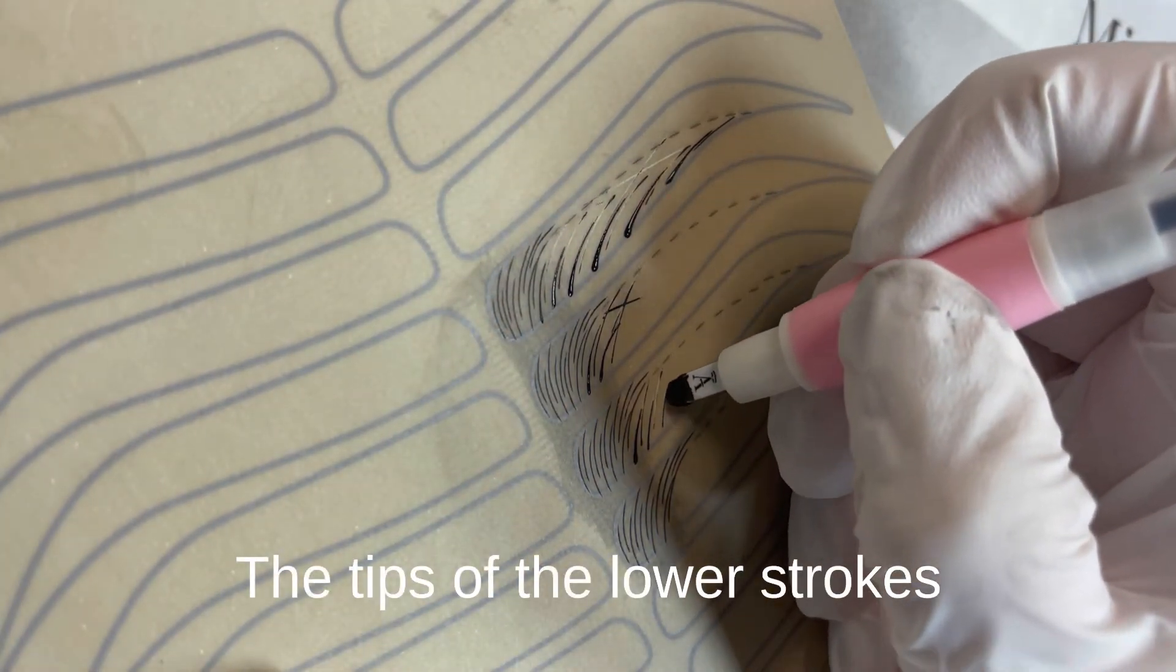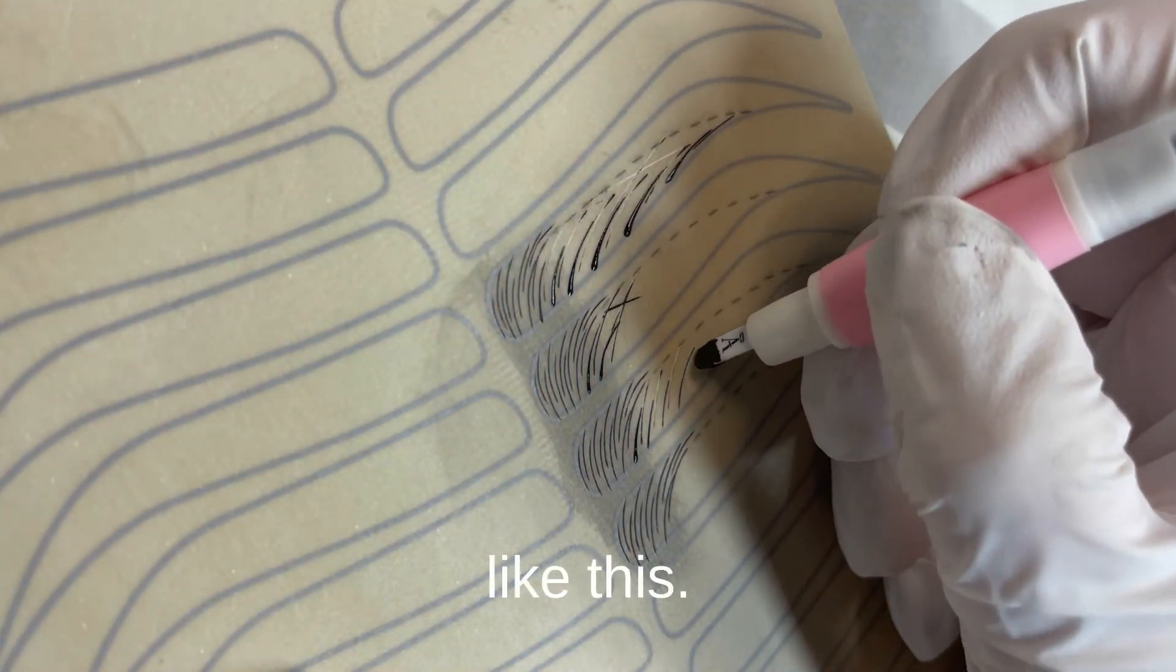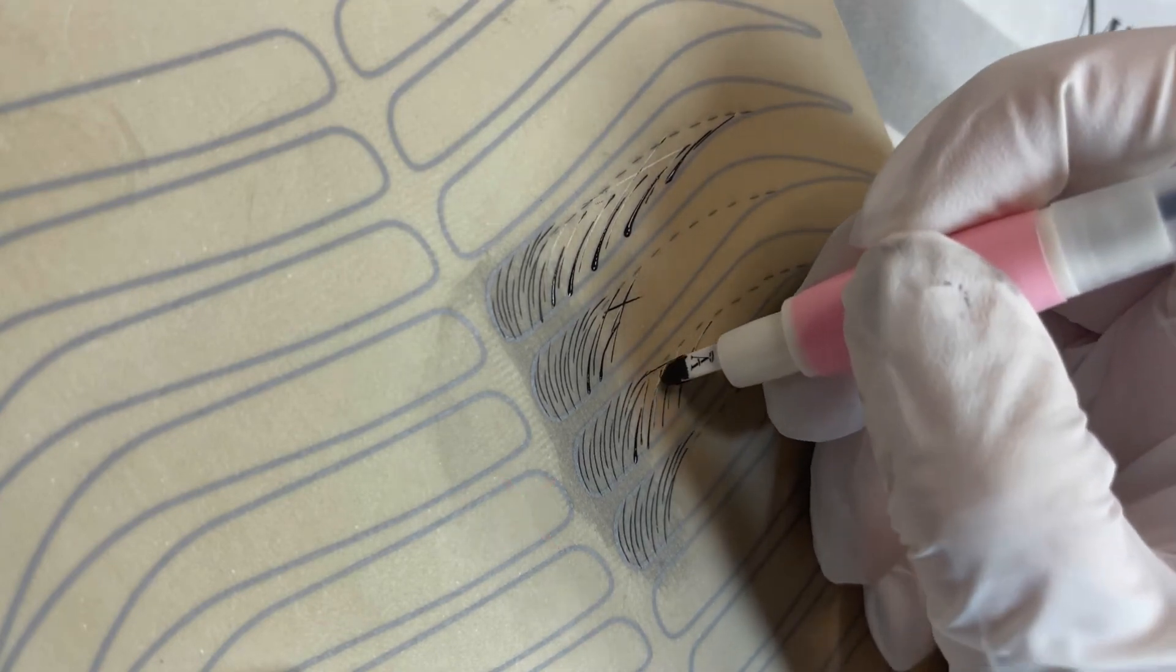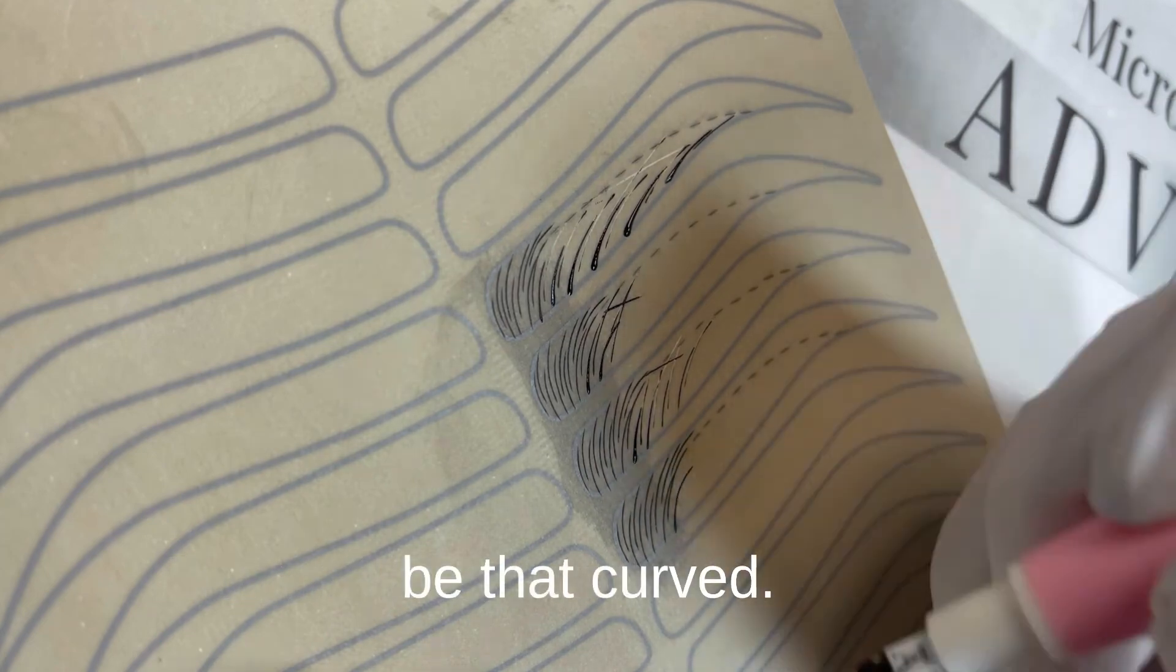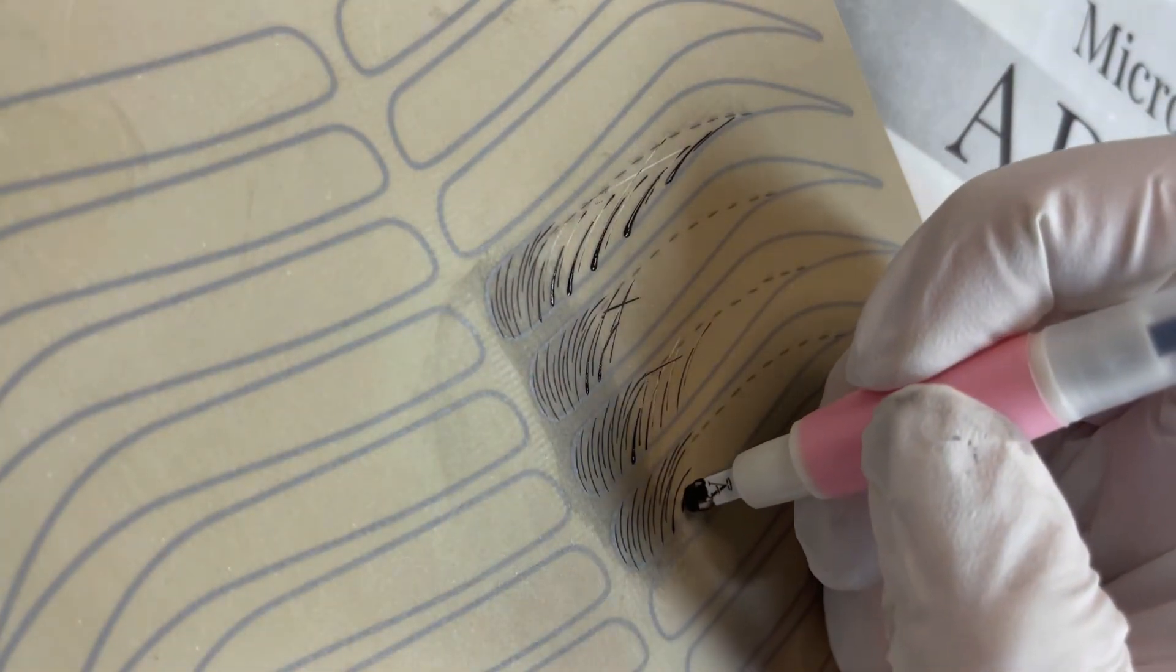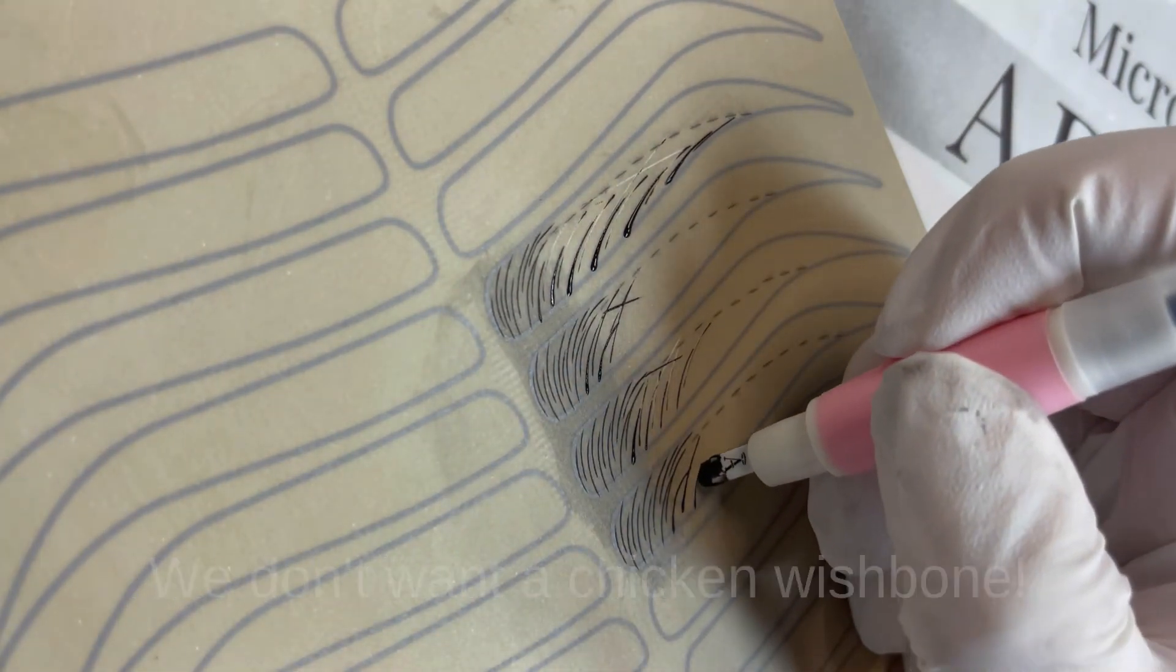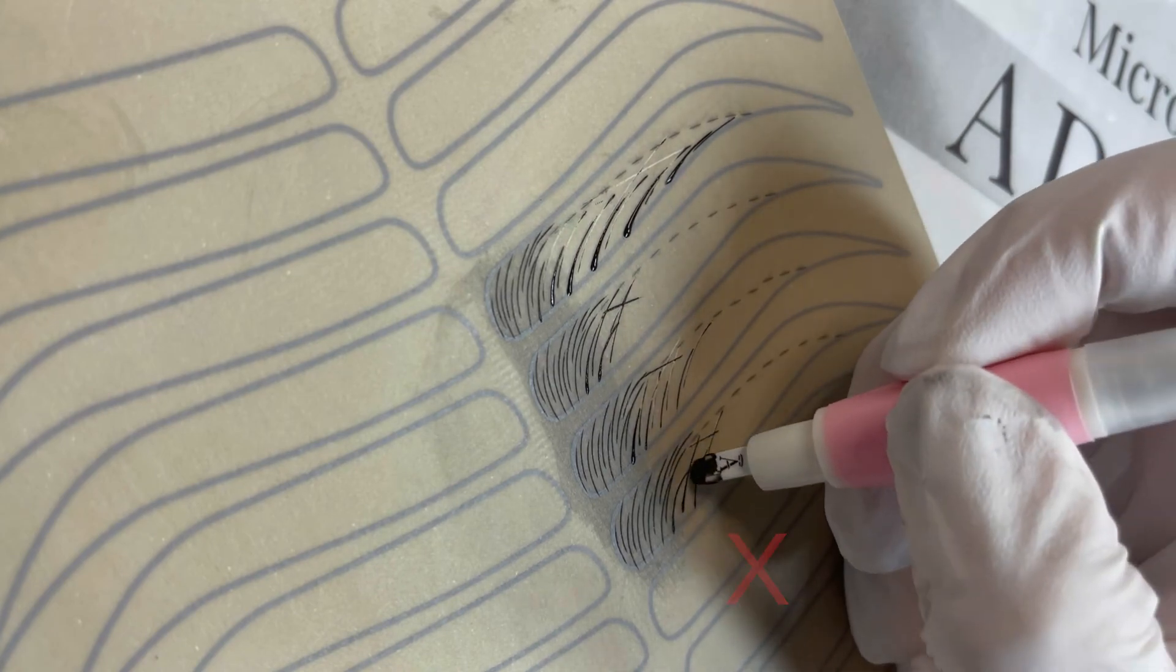of the lower strokes should be curved like this. The first lower stroke should not be that curved, then it looks like a chicken wishbone. We don't want chicken wishbone.